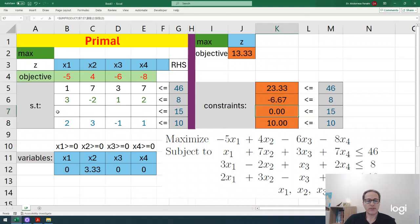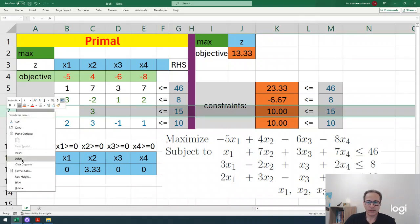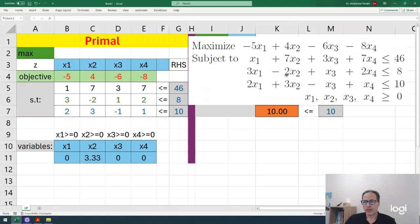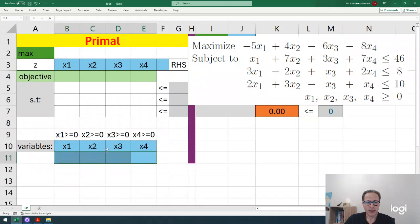This zero means multiplying these coefficients by the variables. Right now we have 0, 3.33, 0, 0 for decision variables. If I put 3 here and others are zeros, it becomes 10 and still satisfies the constraint. I don't need this extra row, so I'll remove it.